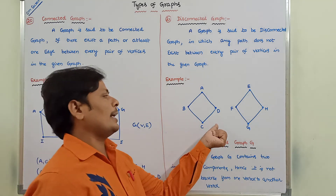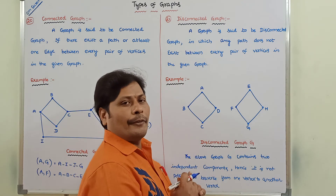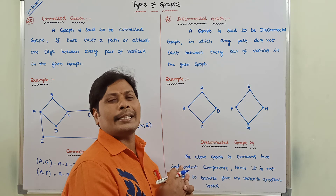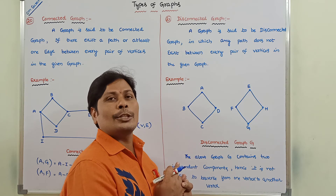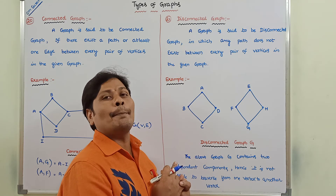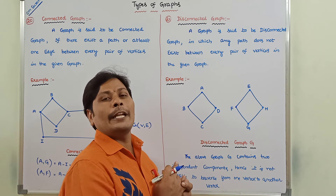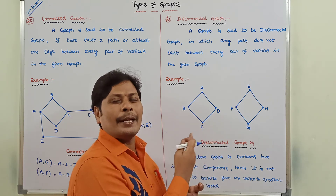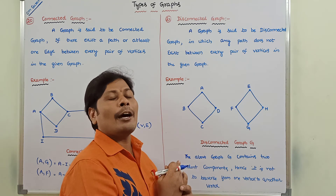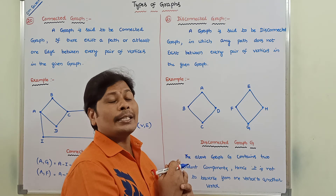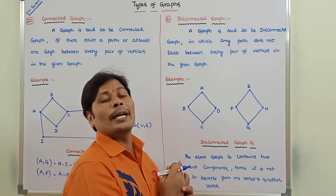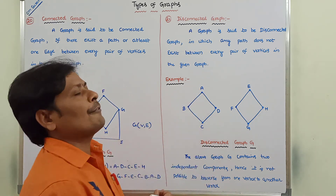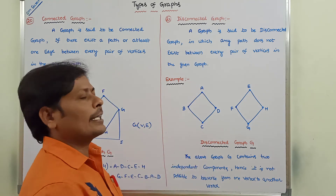Now we can go for a disconnected graph. A graph G is said to be a disconnected graph if it does not contain any path between every pair of vertices. We can take any pair of vertices — that pair of vertices are not connected by using any path. That type of graph is called a disconnected graph.